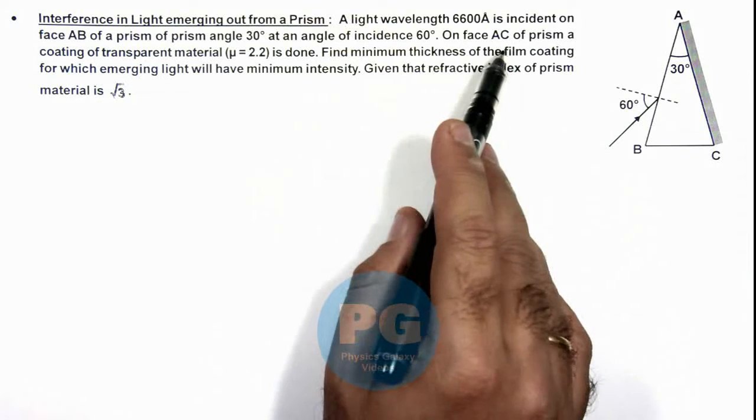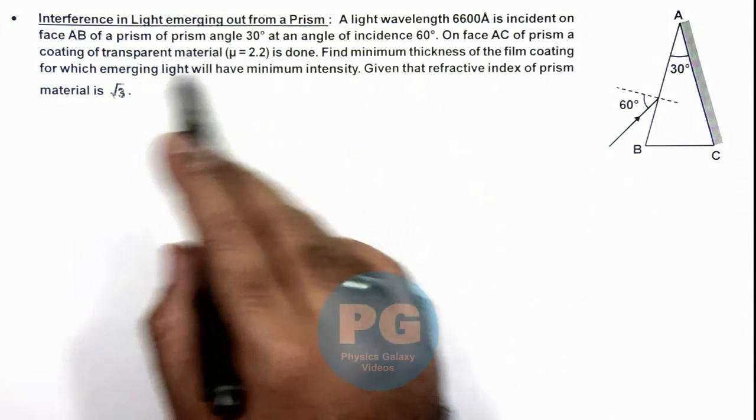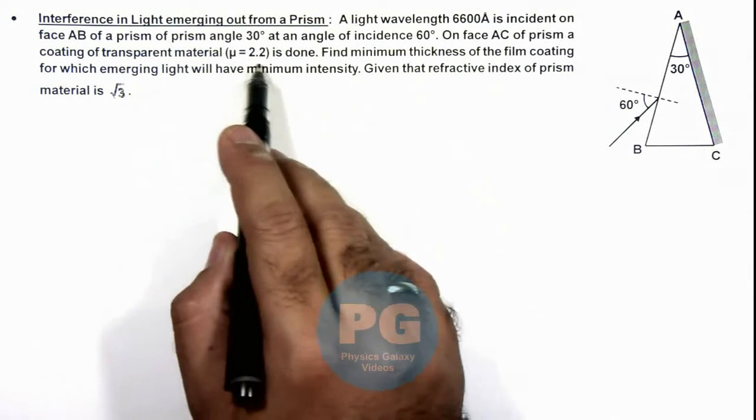On face AC of prism, a coating of transparent material with mu equals 2.2 is done.